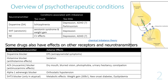In schizophrenia, people may have too much dopamine, whereas too little dopamine is associated with symptoms of depression, ADHD, and Parkinsonism. In depression, there is also too little serotonin (5-HT) and/or too little norepinephrine.